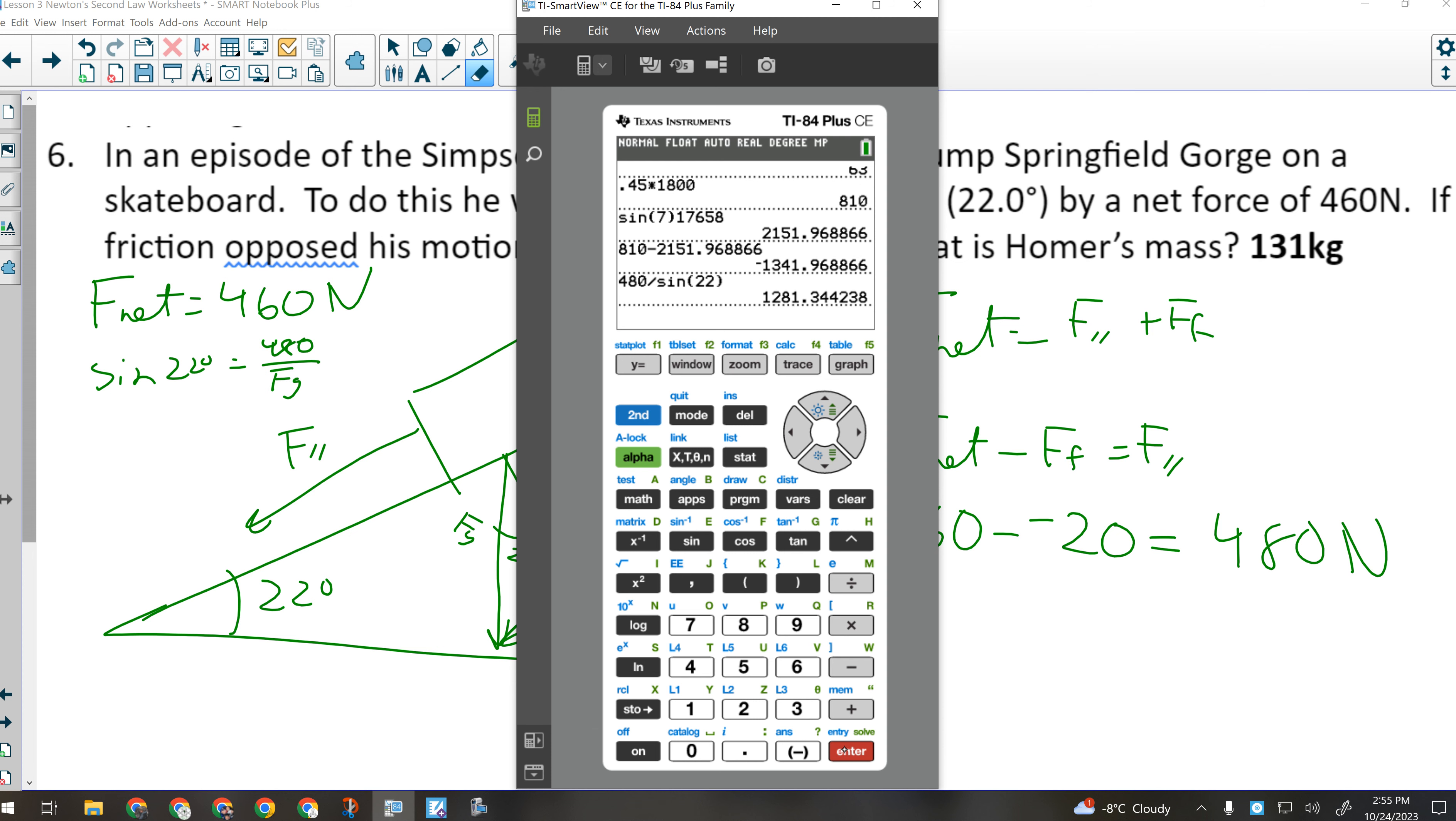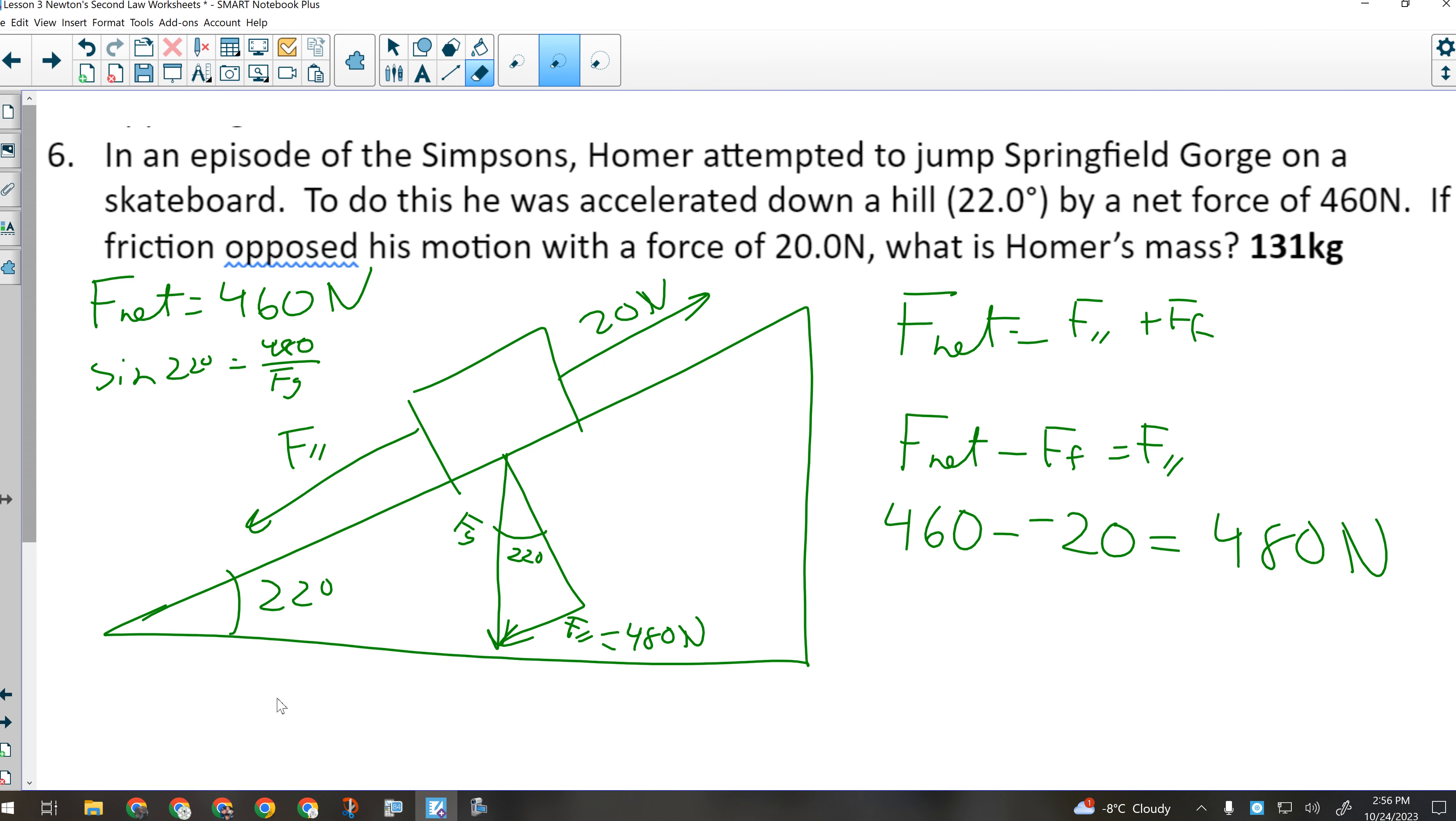There is Homer's weight. It's almost the same as the force of friction that was acting up Northbridge Drive in the last question. Because Homer's, well, big. His weight has been, on the Simpsons, established as anywhere between 260 and 300 and some pounds. So he's a big guy. If I divide that force of gravity, that weight, by 9.81, I get that Homer has a mass of 131 kilograms. That is 287 pounds. He's a big guy.